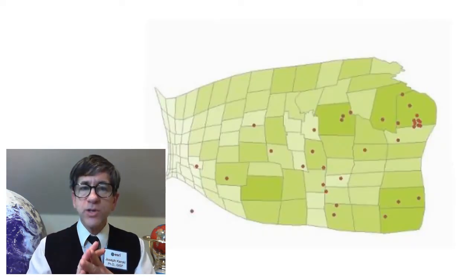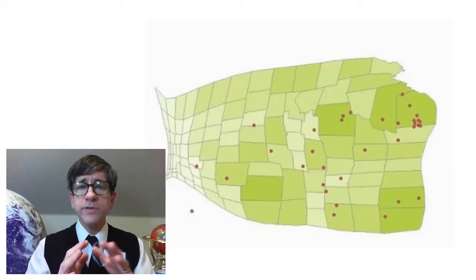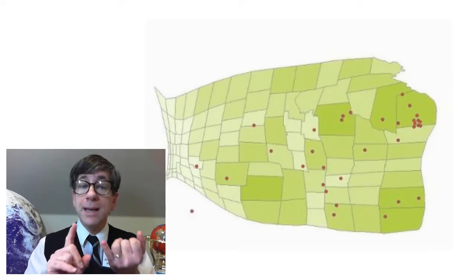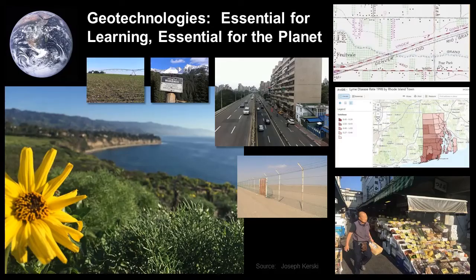Each week in this course we will watch a few videos and read some pertinent information about how maps and geospatial information can be used to engage, inform, and inspire — how you can use location intelligence and geographic information systems to understand the past and the present, and plan for a more sustainable, happier, healthier future.